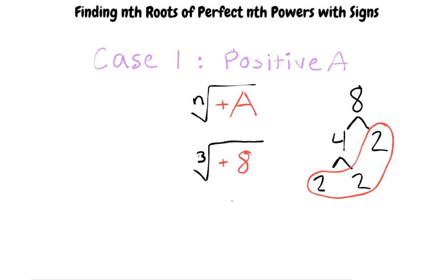Right. In this case, we can break down the 8 into a 2 and a 4, then that 4 into a 2 and a 2, and because there are three 2s, we can pull a single 2 out of the root because the number n is a 3 and the 8 is composed of three 2s. Now, because both n and a are positive, the resulting number is positive 2.